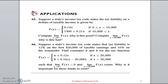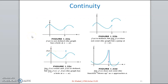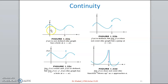Now let's come to continuity. I have shown you here four graphs. Looking at the first graph carefully: the limit exists — coming from the left-hand side you approach a value, and from the right-hand side as well, so the left-hand limit and right-hand limit both exist. However, when x is equal to a, the function value does not exist because of the open circle — there is no y when x equals a.